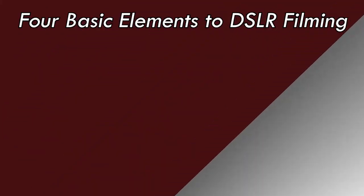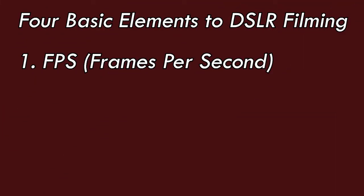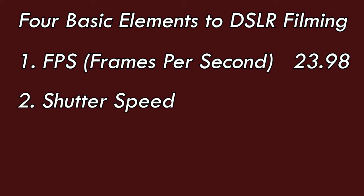And there you have it — those are our four basic elements to look at when filming with your DSLR. To review: FPS, frames per second — typically filmmakers use 23.98 or 24. Shutter speed: if we're filming in 24, then we want it to be double that, so 48 — or 50.